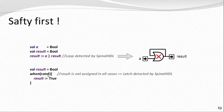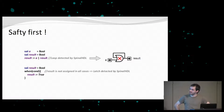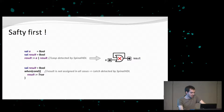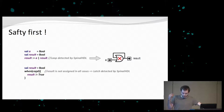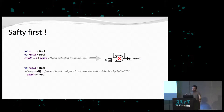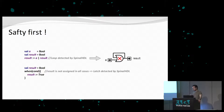Safety first. When you do RTL, it's very easy to do bad things — like inferring combinatorial loops across multiple modules, or inferring latches by forgetting to assign combinatorial signals in all cases. SpinalHDL will check all those things for you. For example, this loop will be detected by the SpinalHDL compiler, or here a result not assigned by default when a condition is false will be flagged as a potential latch. If SpinalHDL successfully generates the output RTL, you have much more trust in it than in a handwritten one. There are also checks about clock domain crossing.